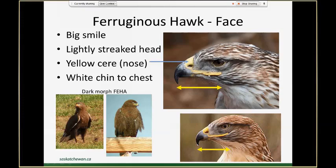Light morph Ferruginous hawks will also have very light fine streaking on their heads. They have a very bright yellow cere — that fleshy patch above their beak and above their nostrils — and it's very noticeable from a distance because it's so large and brightly colored. Ferruginous hawks also have a white chin that transitions into a white chest, and that's going to be important when we compare their faces to Swainson's hawks and red-tailed hawks.